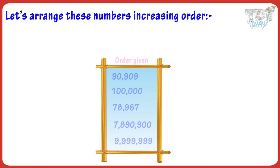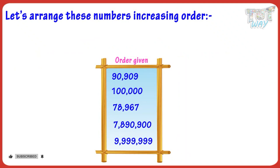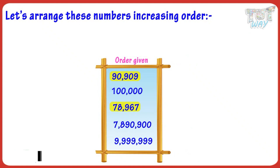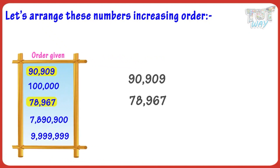Arrange these numbers in increasing order, that is from smallest to biggest. Which one is the smallest number? 78,967 and 90,909 have the least number of digits, so they are the smallest numbers.